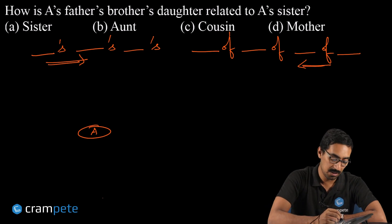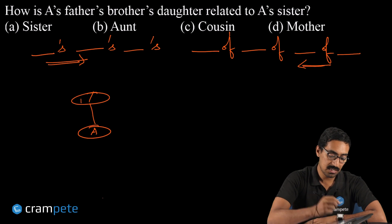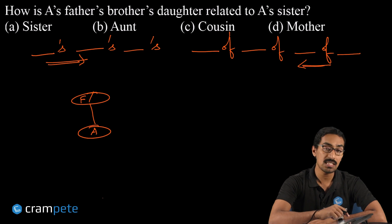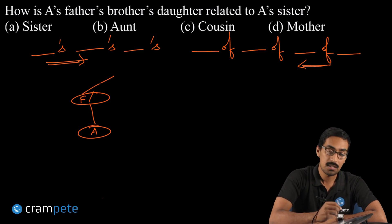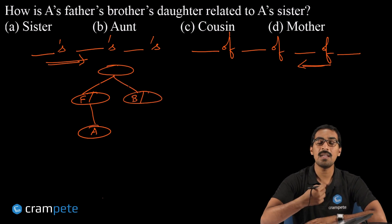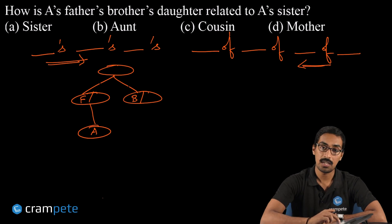So I start with A as a person. A's father, so clearly should be one generation above. Now A's father, as we discussed, has to be put here. Let me assume A's father as F. A's father's brother—so that father now has a brother. So clearly there should be the father's parents in one circle, and under that we have a brother.